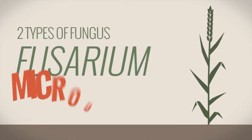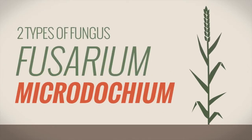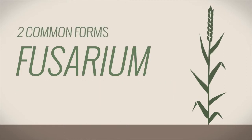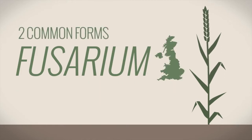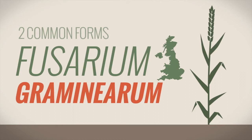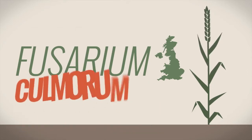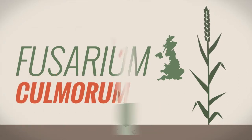Fusarium ear blight is a combination of two types of fungus: True Fusarium and Microdocium. Fusarium has two common forms in British wheat crops: Fusarium Graminearum and Fusarium Culmorum.